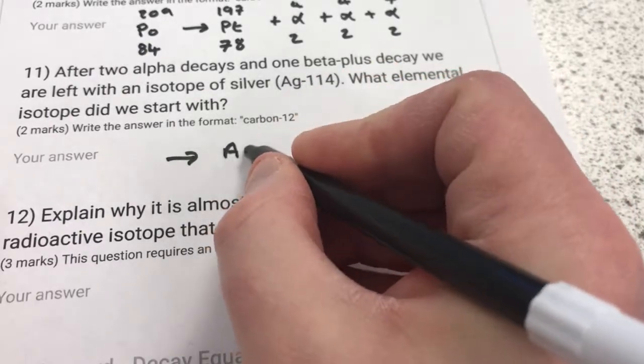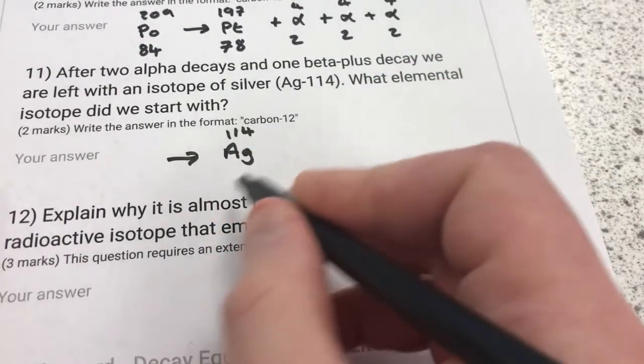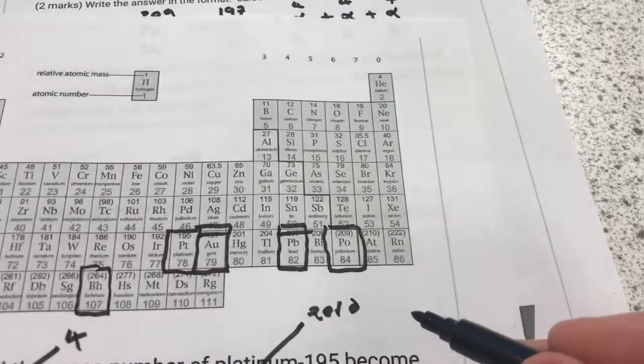Okay, so we've got silver, so it's Ag-114, but I don't know what the atomic number for silver is, so I'll need to use the periodic table for that.